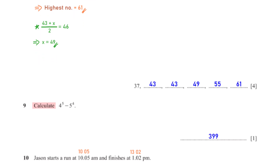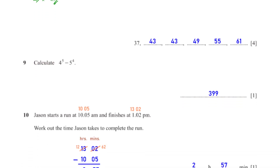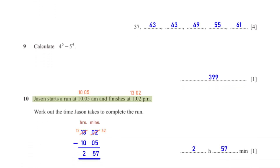Calculate 4 raised to the power 5 minus 5 raised to the power 4. When we type this into the calculator we get 399.